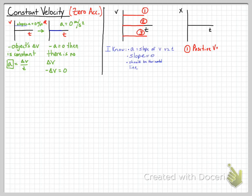The first line has a positive velocity. Since it's a velocity versus time graph and that line is in the positive quadrant, it has a positive velocity. On a position versus time graph, that should be a positive slope line. You can see that the slope of the position versus time graph is positive, and the slope of a position versus time graph is velocity.